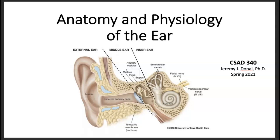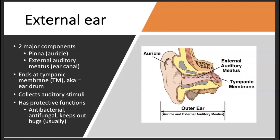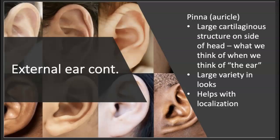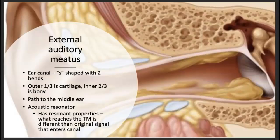We have the external ear, whose primary responsibilities are to collect sound and protect the ear. Those are the two primary responsibilities. Of course, the pinna is the large cartilaginous structure on the side of the head which varies substantially by individual. It has important functions for localization and collecting sound.